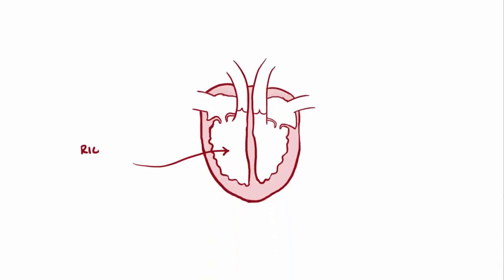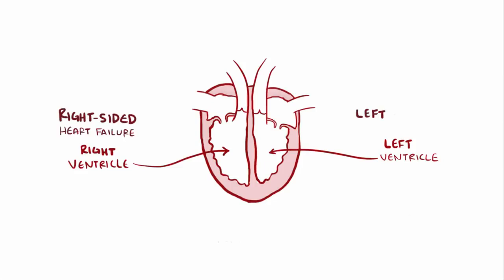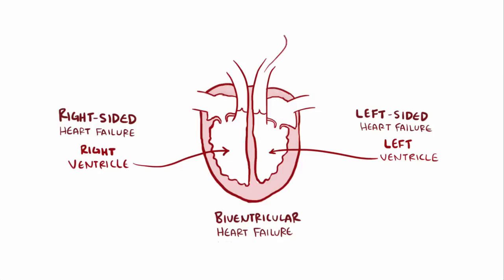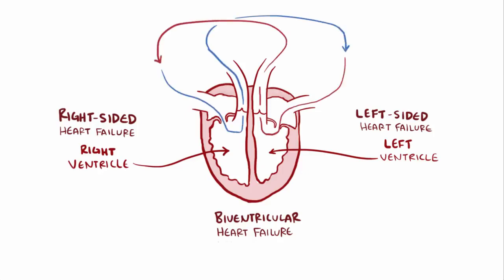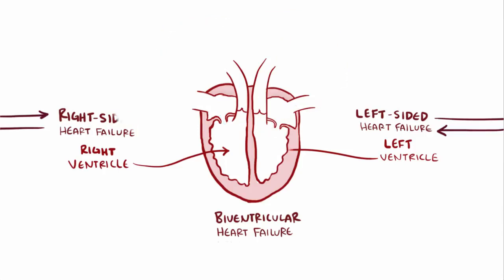Heart failure can affect the right ventricle, the left ventricle, or both ventricles, so someone might have right-sided heart failure, left-sided heart failure, or both, which is called biventricular heart failure, each of which can have systolic or diastolic failure. If less blood exits either ventricle, it'll affect the other since they work in series — so left-sided could cause right-sided, and vice versa. These terms really refer to the primary problem affecting the heart, basically which one was first.